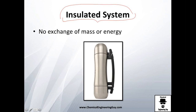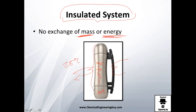Last but not least, an insulated system is in theory impossible, but we can approximate it. It's impossible because there is no change of energy, which doesn't happen in real life. For example, let's say we have our coffee here at 100°C and outside is 25°C, but this awesome material does not exchange temperature with the outside. So we have 100 milliliters of coffee at 100°C, and its heat energy stays the same.